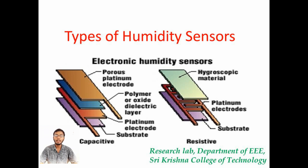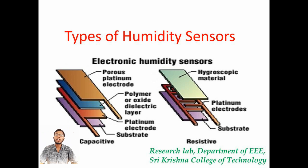The next type is the resistive humidity sensor. In the resistive type, hygroscopic material is present at the top, the platinum electrode is present in the center, and a substrate is at the bottom. The platinum electrode absorbs certain chemical compounds, therefore the resistivity of the platinum material varies. By the change in resistance, we can measure the compound present.